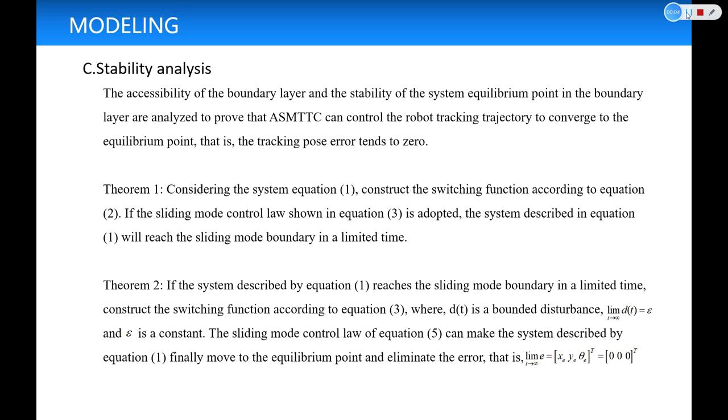Stability analysis. The accessibility of the boundary layer and the stability of the system equilibrium point in the boundary layer are analyzed to prove that ASMTTC can control the robot tracking trajectory to converge to the equilibrium point. That is, the tracking pose error tends to zero. Theorem 1: Considering the system equation 1, construct the switching function according to equation 2. If the sliding mode control law shown in equation 3 is adopted, the system described in equation 1 will reach the sliding mode boundary in a limited time.